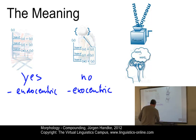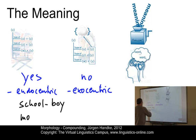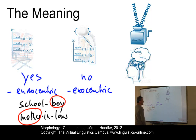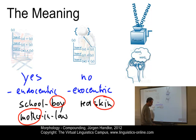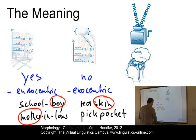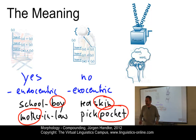Endocentric compounds would be something like schoolboy or mother-in-law, where the heads boy and mother determine the meaning. Exocentric ones would be something like redskin, where the head skin does not really determine the meaning. Neither does it in pickpocket — a pickpocket is not a type of pocket. Let us illustrate these two main semantic types of compounds, starting with exocentric compounds.